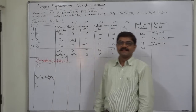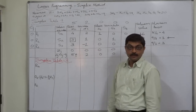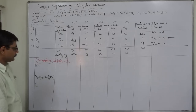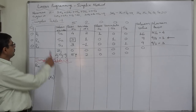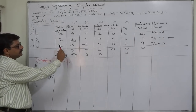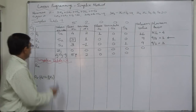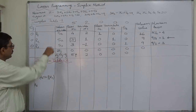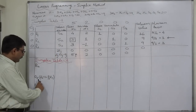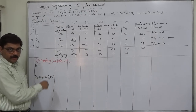Hello friends, welcome back. Let us prepare simplex table 2 for the same problem. As we know that we have selected R2 as the replacement row or key row, so R2 divided by 3, or one third of R2, will give us row 5 in the next table, which will take place of R2.